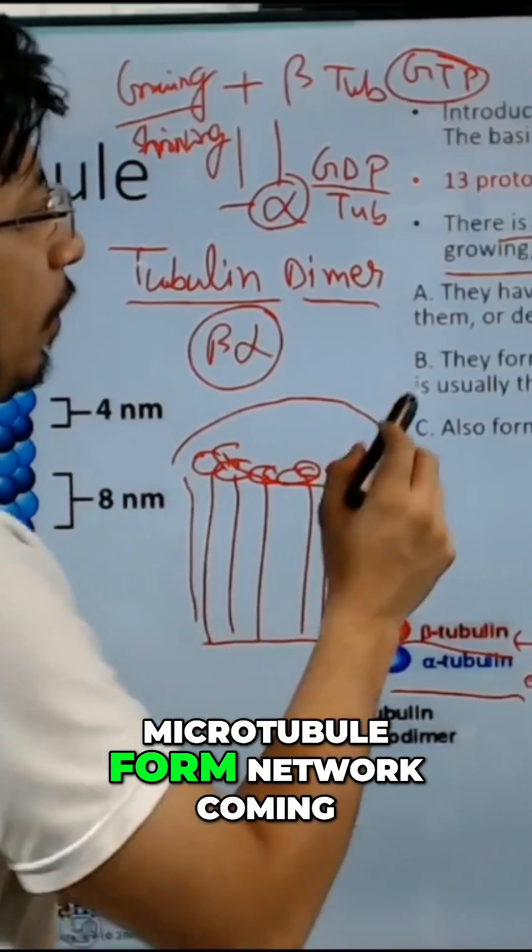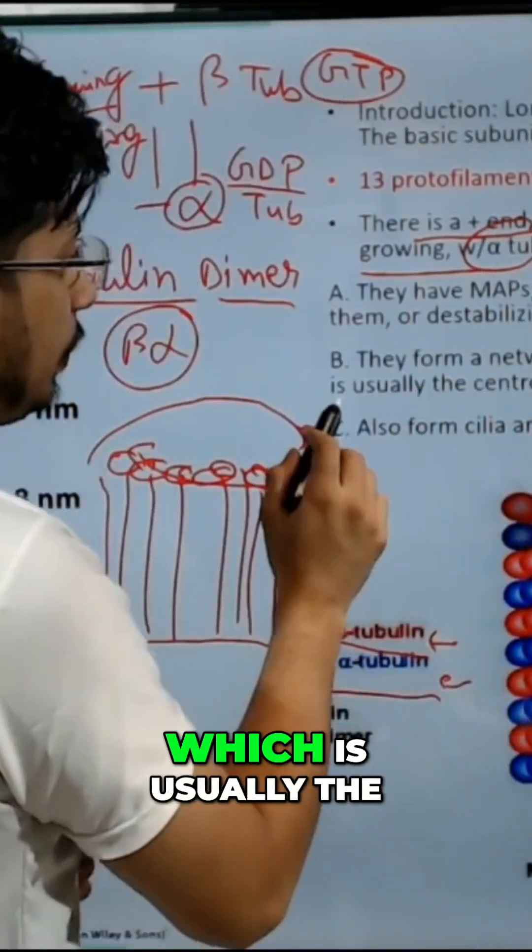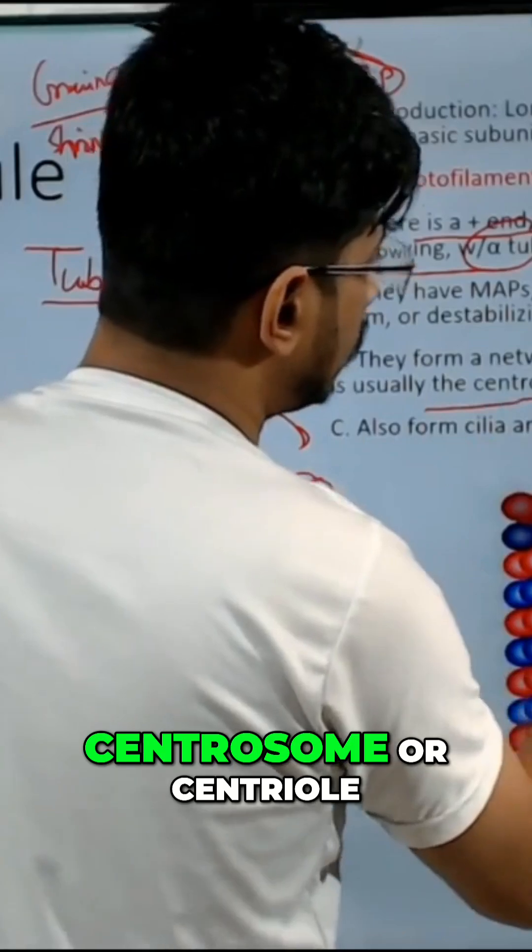Microtubules form a network coming from the microtubule organizing center, which is usually the centrosome or centriole.